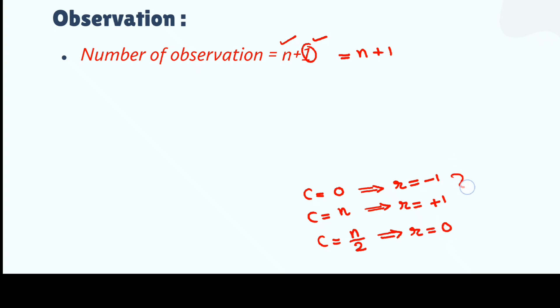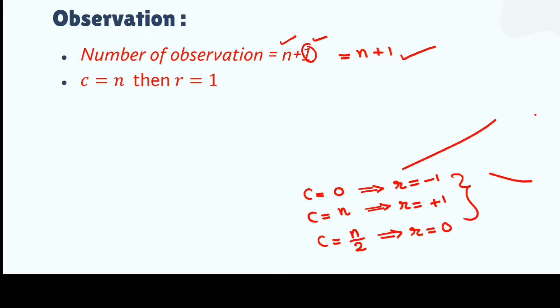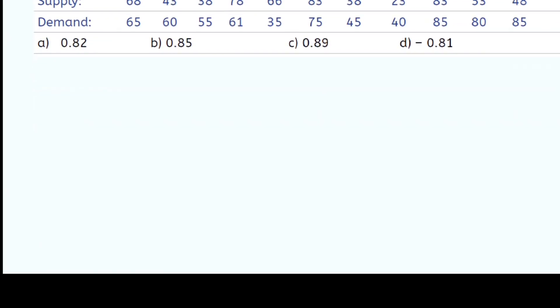These are important points that can be asked in the examination. Remember: when C equals N, R is perfectly positive (+1); when C equals 0, R equals minus 1; when C equals half the observations, R equals 0. Now let me show you one more example demonstrating how quickly you can solve using this method — just write the signs and use your calculator.